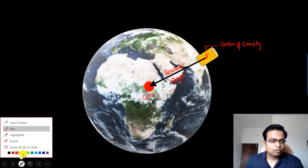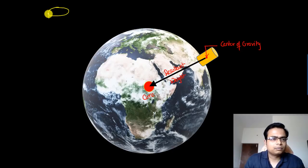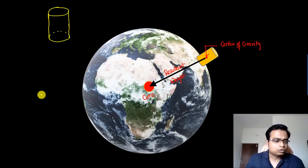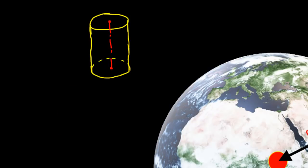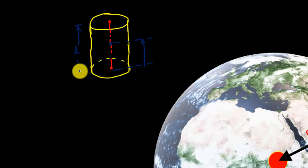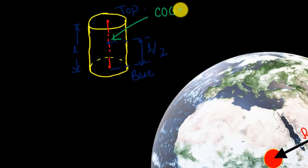If you have a cylindrical object, it will have an axis from center top to center bottom. The center of gravity of this cylinder will lie somewhere here. If the height of the cylinder is L, then the center of gravity will lie at a distance of L/2 from the base. This point right over here is what you call the center of gravity for this cylinder.